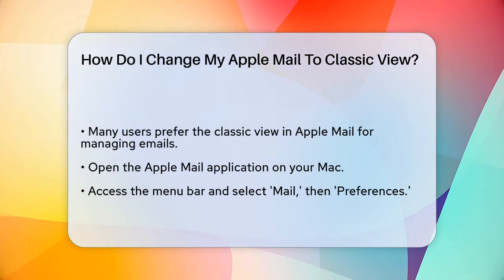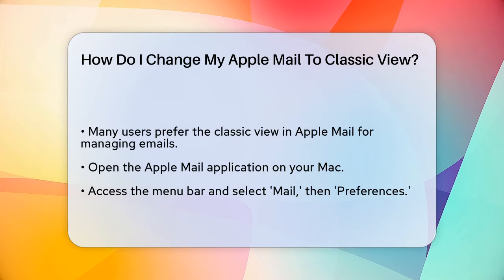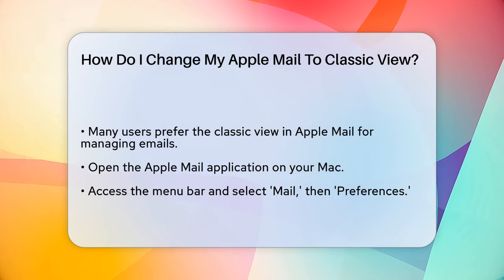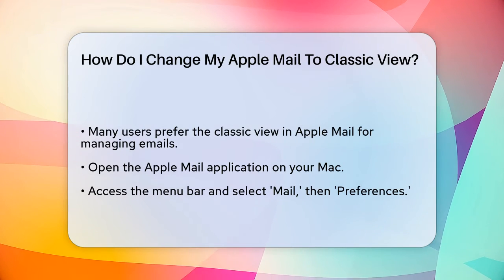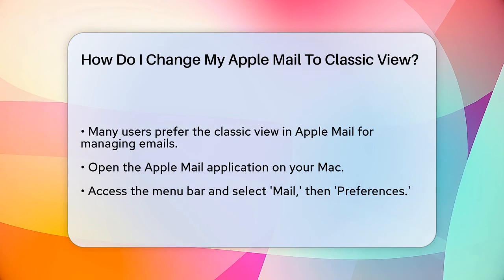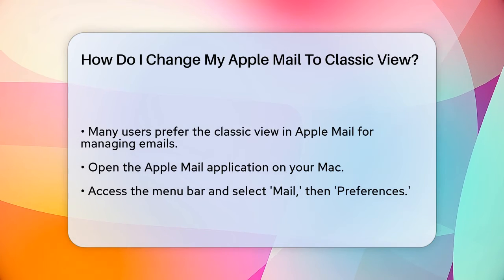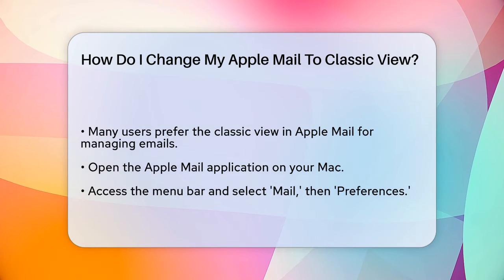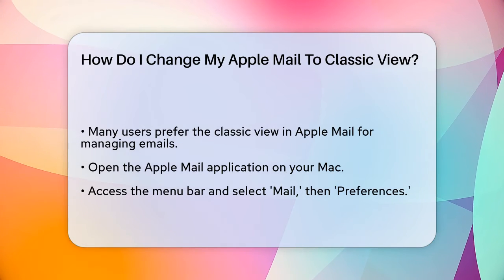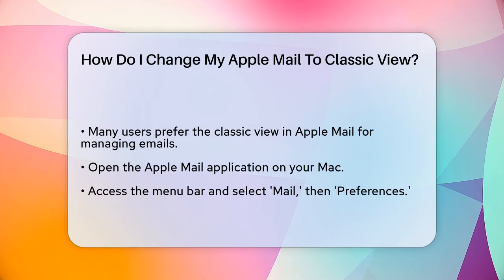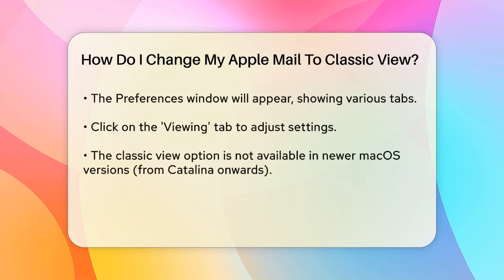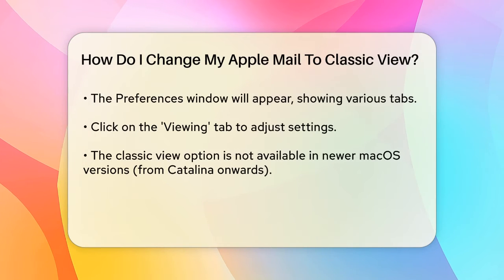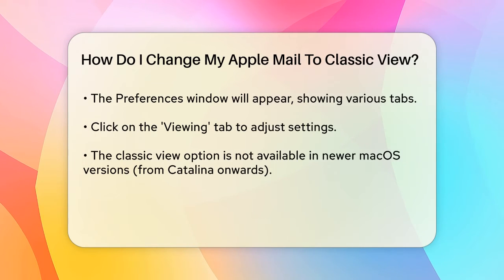First, you need to open the Apple Mail application on your Mac. Once it's open, go to the menu bar at the top of the screen and select Mail, followed by Preferences. This will open the Preferences window, where you can adjust various settings.